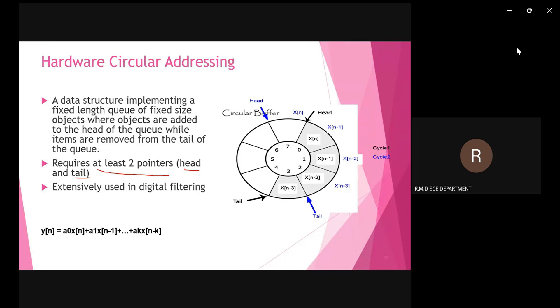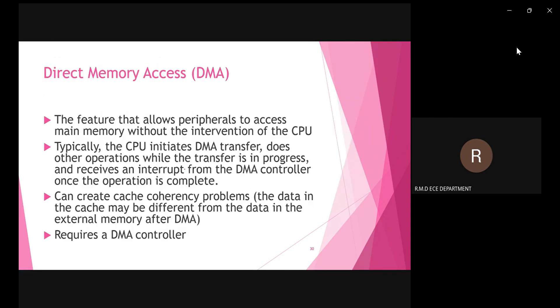This is called circular addressing, or circular buffer. It is one type of addressing mode of DSP processors, and it also reduces execution time.